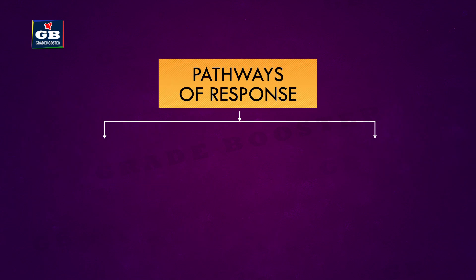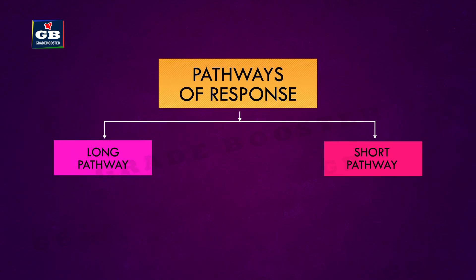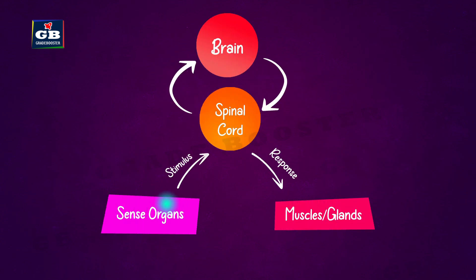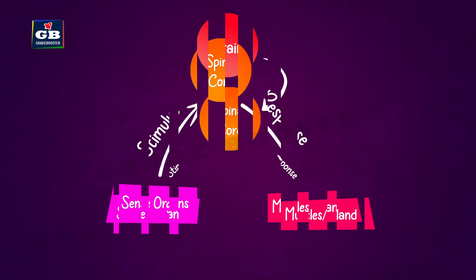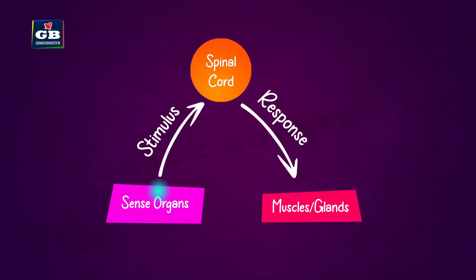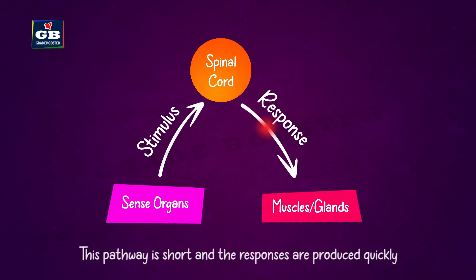There are two pathways by which responses are produced to stimuli. In the long pathway, information passes from the stimulus to the spinal cord, then to the brain, where a response is generated and passes back down through the spinal cord to the muscles — this takes considerable time. In the short pathway, information passes to the spinal cord where it is processed quickly and responses are produced.